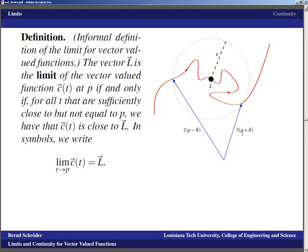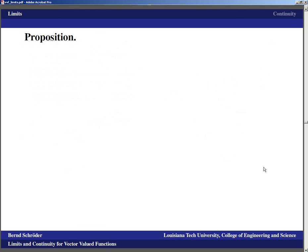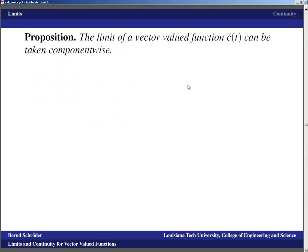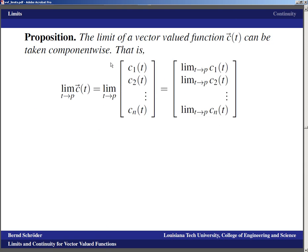This points toward the epsilon-delta definition, which we will not discuss in the mainstream of these presentations, because we have a simpler result that replaces things computationally: the limit of a vector-valued function C of T can be taken component-wise. That is, the limit as T goes to P of C of T equals the vector whose entries are the limit as T goes to P of C₁ of T through Cₙ of T. For two dimensions we stop at C₂, for three dimensions at C₃. The limit can be moved into the components.